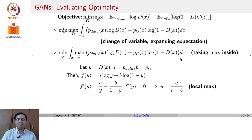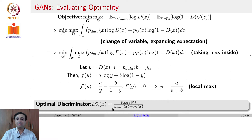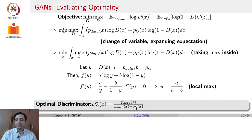Substituting back the variables, the optimal discriminator is obtained when its output equals p_data(x) / (p_data(x) + p_g(x)) for a given x. Let us keep this in mind and continue — that is the optimal discriminator.